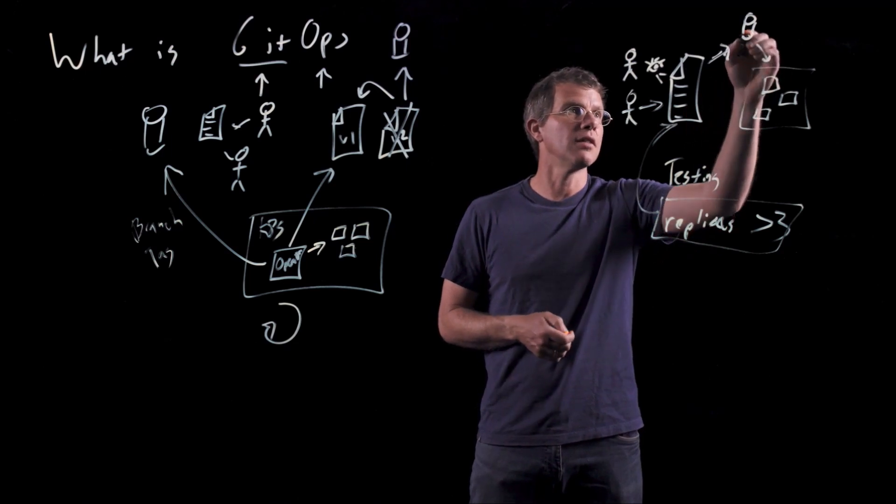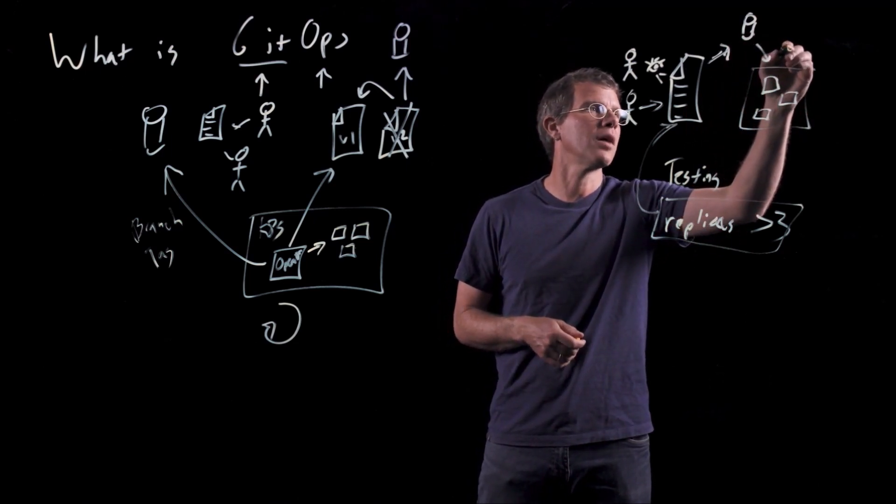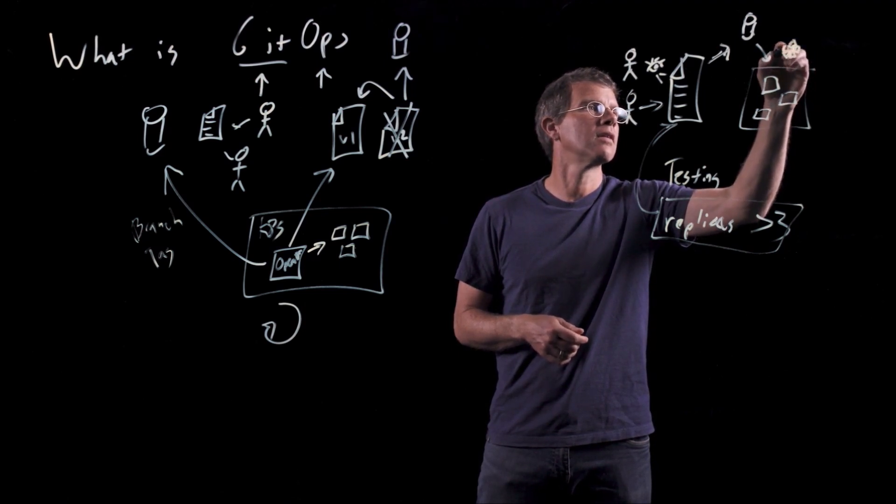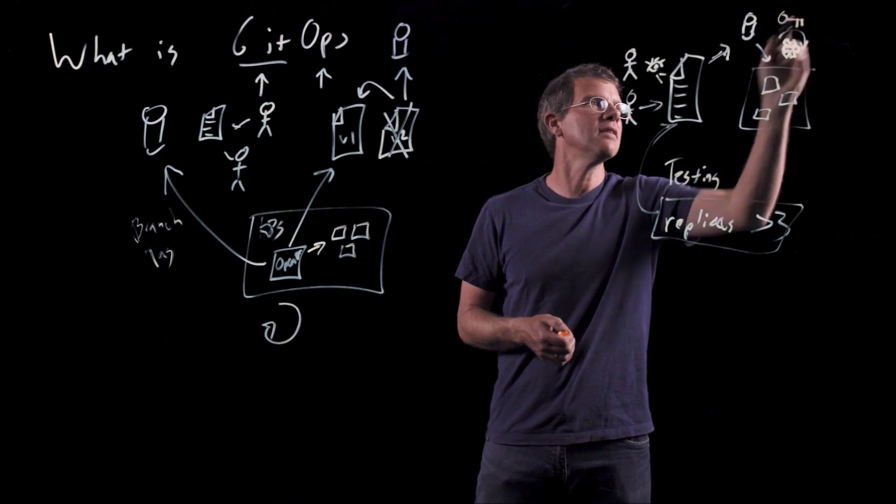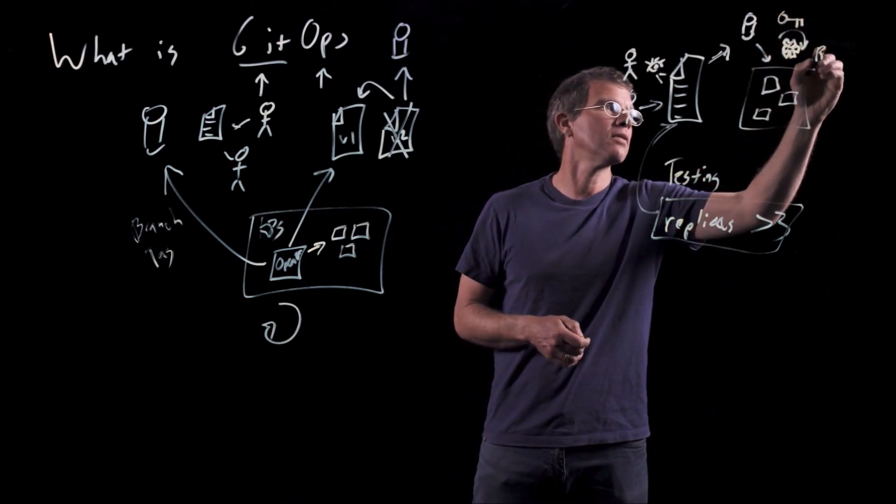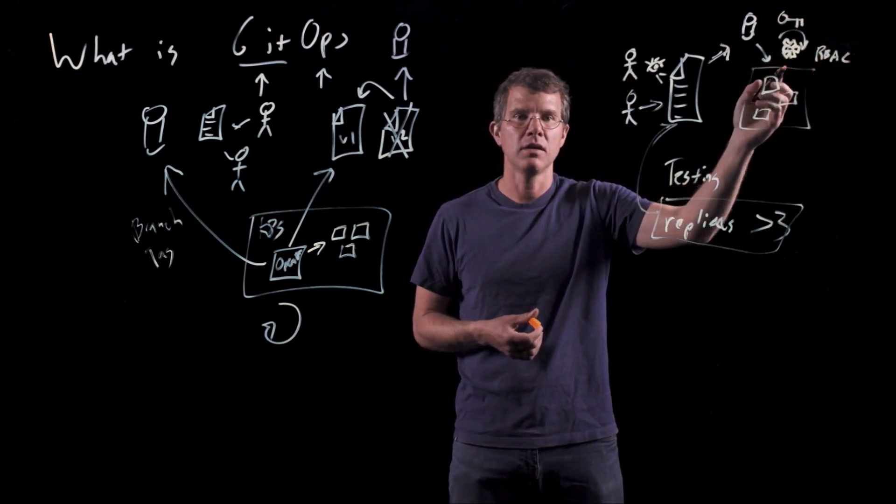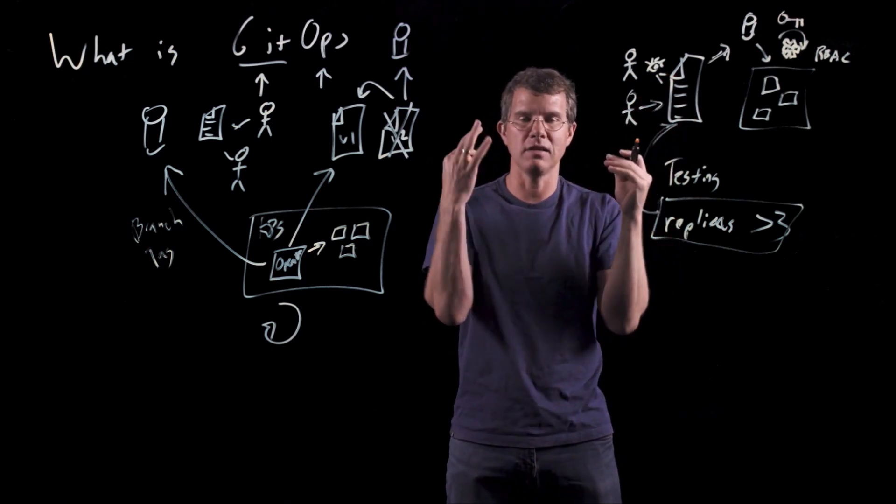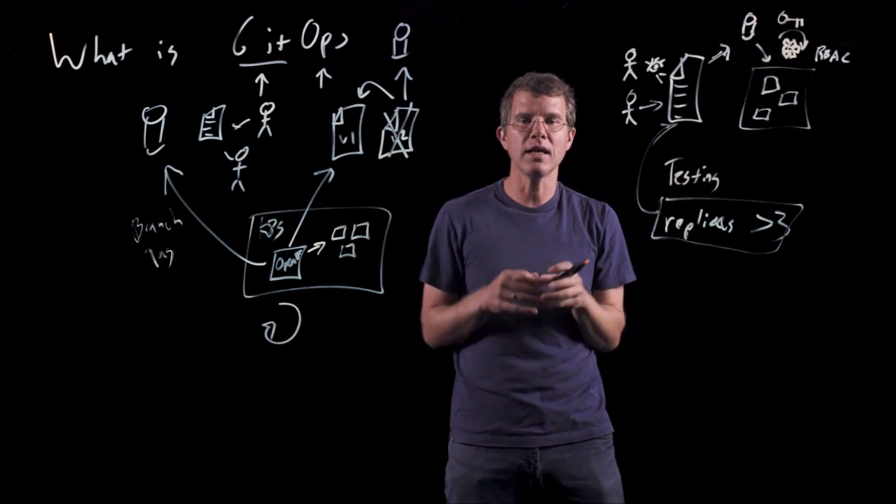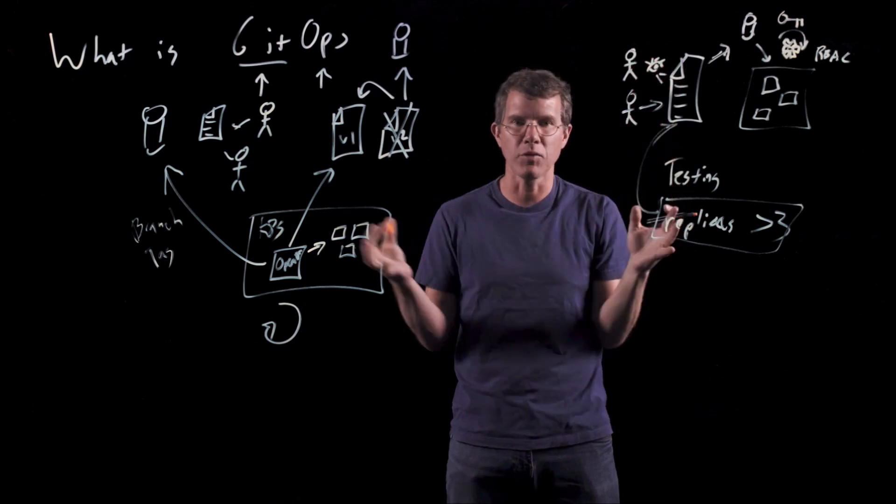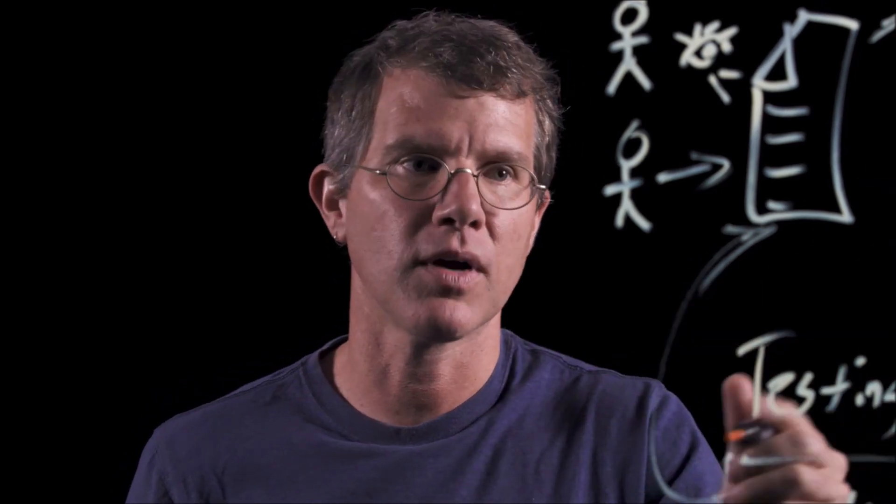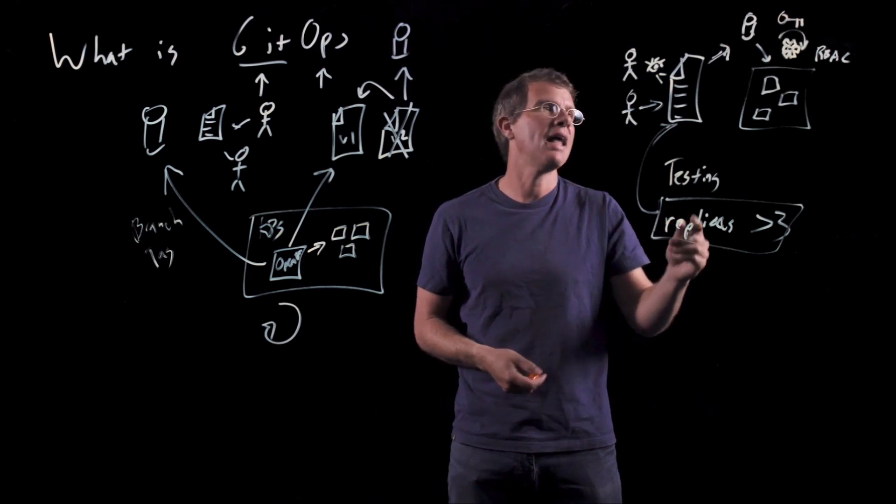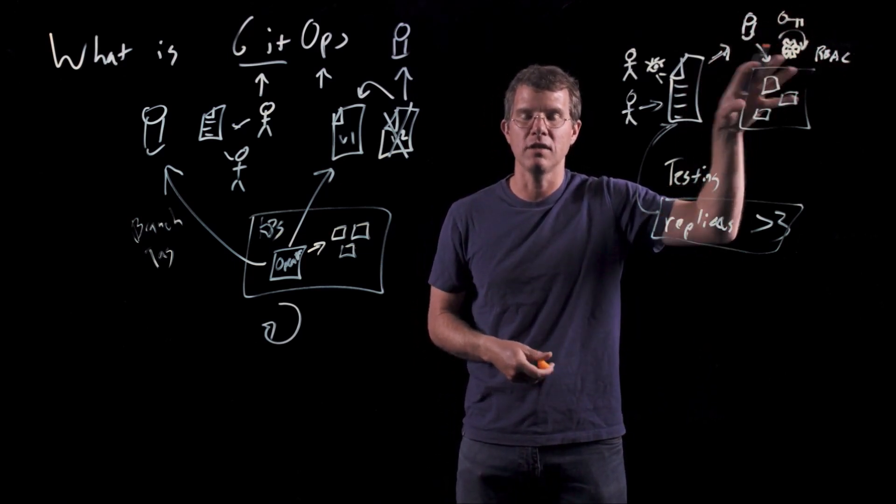Finally, there's a really strong element of security as well in a GitOps environment because the only thing that has the ability, remember, this process of going from the repo out into the environment is done by automation. Right? So I'll draw my gear again here, do my best. We got a little bit of automation that's doing this. Now it turns out that that automation is the only thing that you need to give the keys to your cluster. The only thing that needs access via RBAC to the cluster to make changes is this automation.